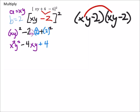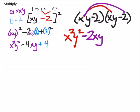we'd distribute xy to the other xy, that's x squared y squared, and then I've got xy times negative 2, that's negative 2xy. I am skipping some steps here,